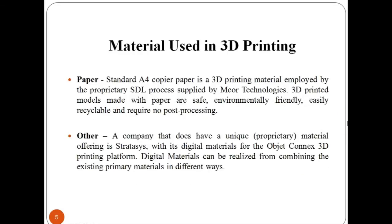Let us have a look at some other materials for 3D printing, such as paper. 3D-printed models made with paper are safe, environmentally friendly, and easily recyclable. Brass, silver, and gold can also be used in 3D printing, although it involves printing a wax mold which is then filled with a molten material.